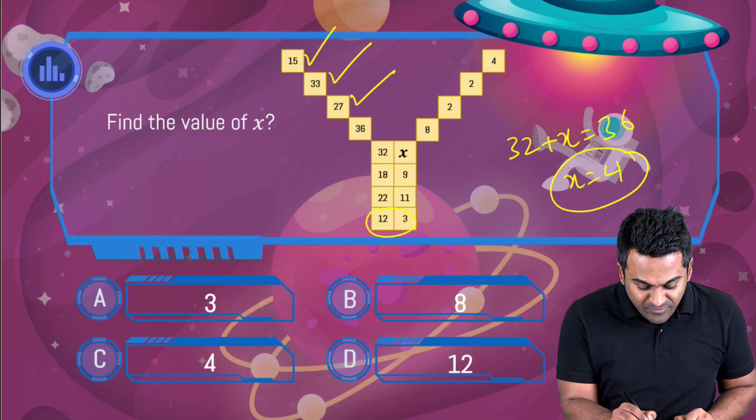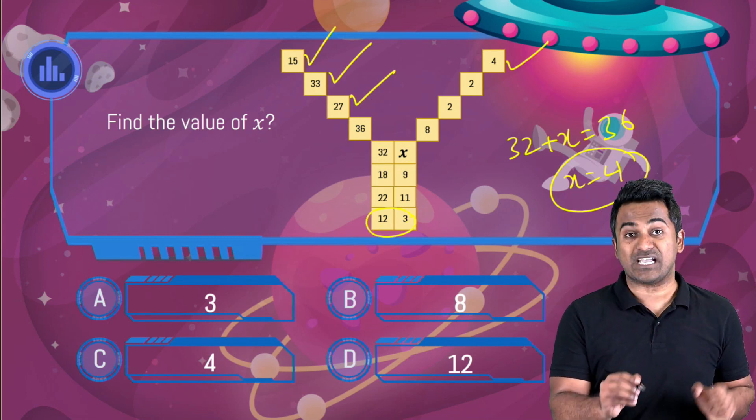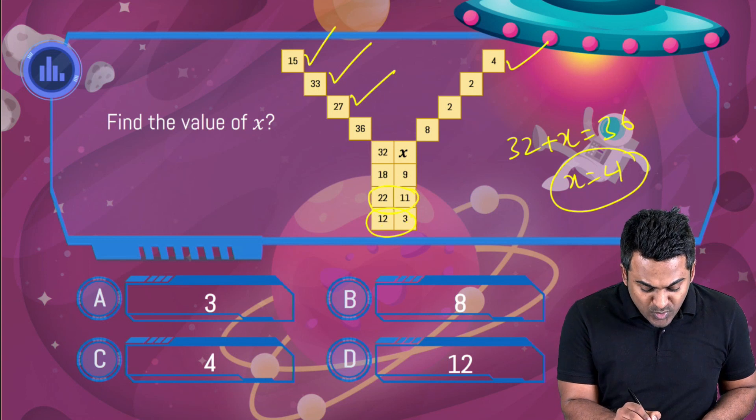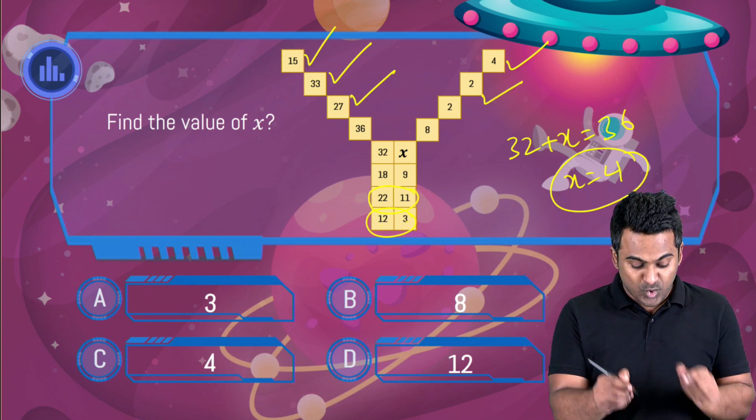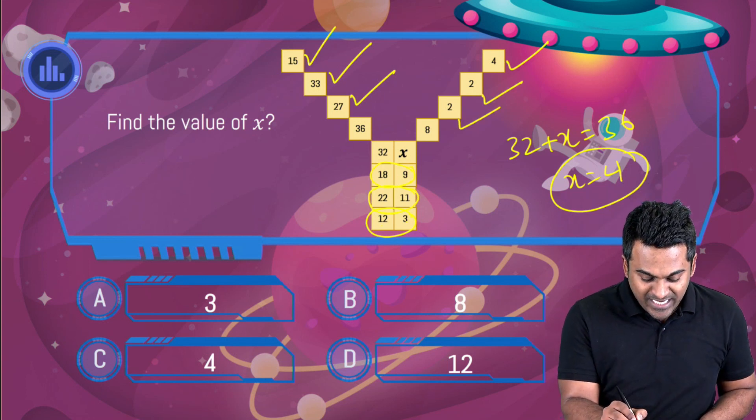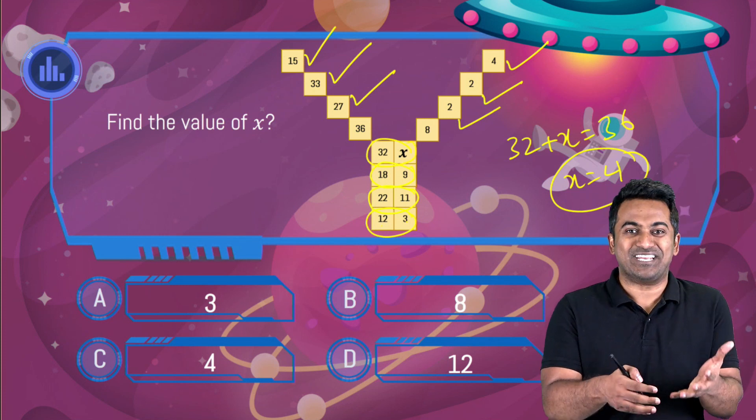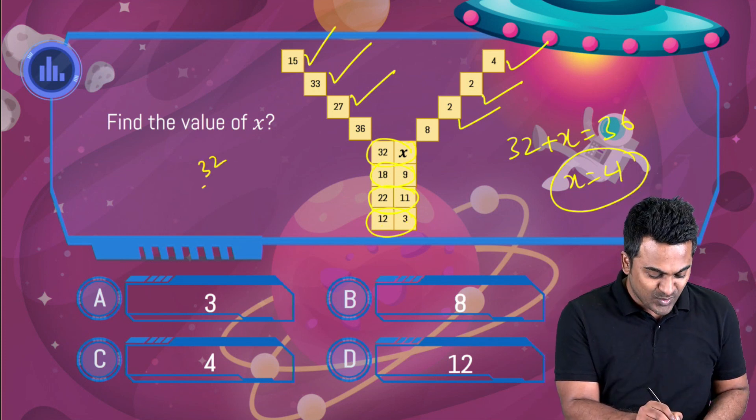So 12 when you divide it with 3 that's how you get this 4, 22 divided by 11 you get 2, 18 divided by 9 is 2. And it's quite obvious: 32 divided by what number gives you 8?